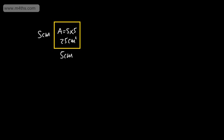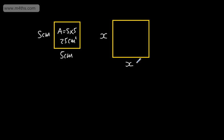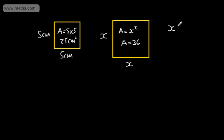Let's now say we had a different square where the side lengths were x centimetres. The area is going to be equal to x multiplied by x, or just x squared. So let's say that the area of this particular square was going to be 36.